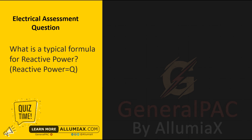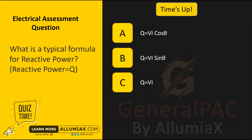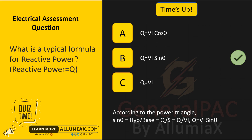What is a typical formula for reactive power? A: Q = V·I·cosθ, B: Q = V·I·sinθ, C: Q = V·I. Time's up. The answer is B: Q = V·I·sinθ. According to the power triangle, sinθ equals Q/S, which equals Q/(V·I), therefore Q = V·I·sinθ.